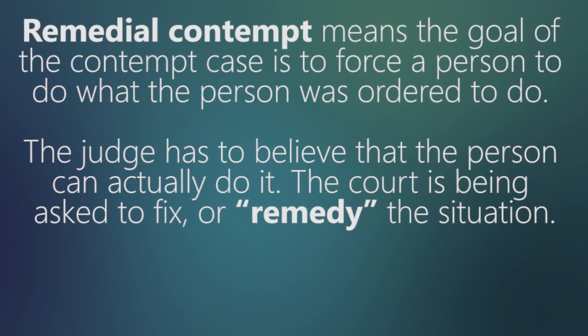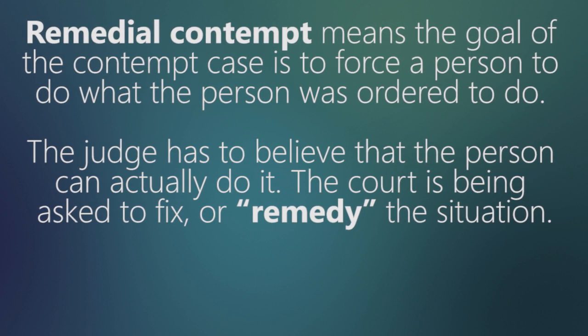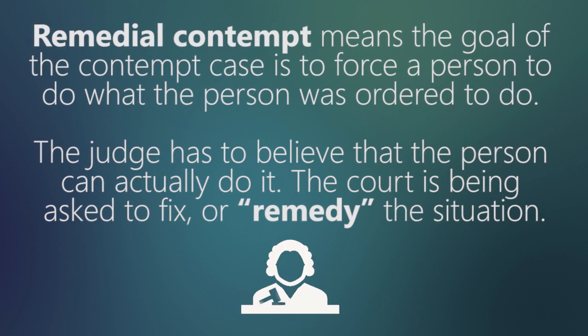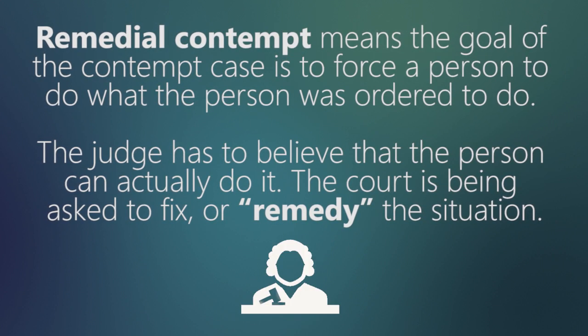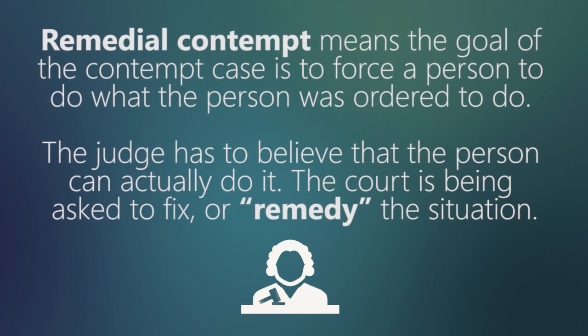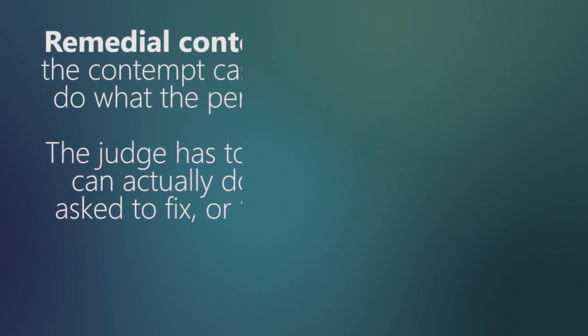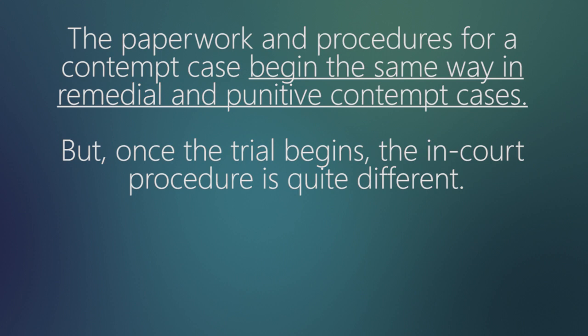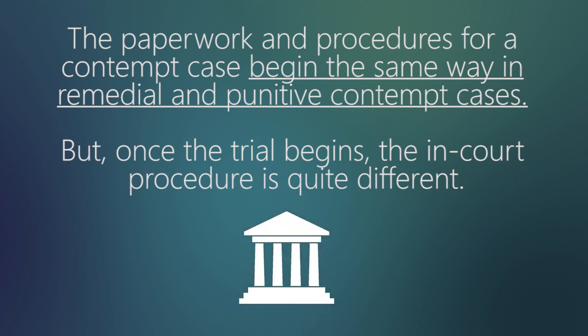Remedial contempt means the goal of the contempt case is to force a person to do what the person was ordered to do. The judge has to believe that the person can actually do it — the court is being asked to fix or remedy the situation. Punitive contempt means the court is asked to punish someone's willful disobedience. The paperwork and procedures begin the same way in both remedial and punitive contempt cases, but once the trial begins, the in-court procedure is quite different.